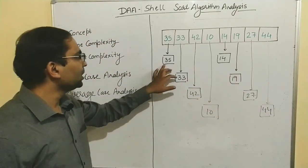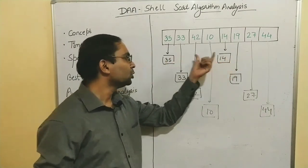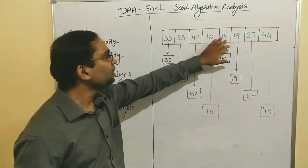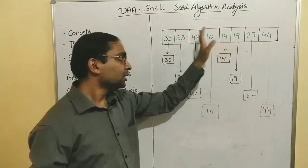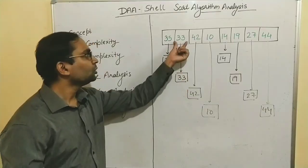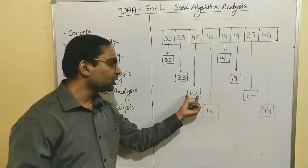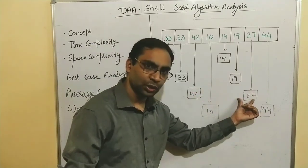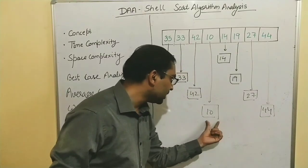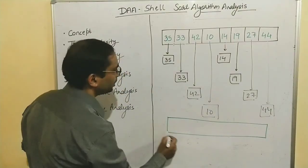Now we compare the elements in each sublist. If the first element is larger and the second is smaller, we swap them. In the first pair, 35 and 14 — 14 is smaller, so we swap: 14 comes to the first position and 35 goes to 14's position. For 33 and 19, 19 is smaller so we swap. For 42 and 27, 27 is smaller so we swap. For 10 and 44, no swap is needed since 10 is already smaller.